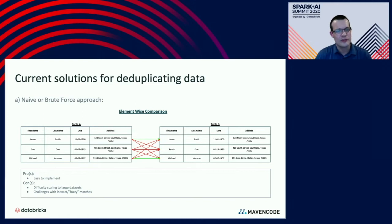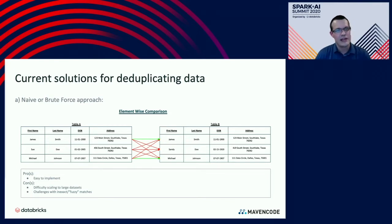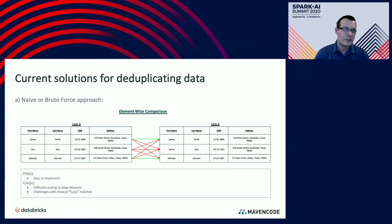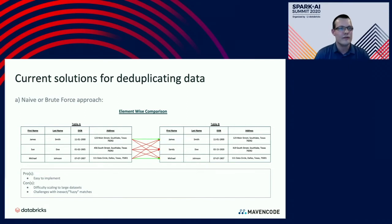So let's start talking about solutions. One of the most basic or naive things you can do is compare every record from data source A with every record from data source B. That's easy to set up, but it doesn't really scale. If you're comparing every single record with every other record, this quickly becomes infeasible as the number of records grows. Plus, you have to do additional work to deal with fuzzy or inexact matches.